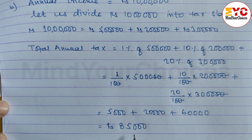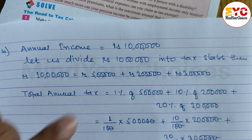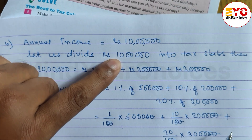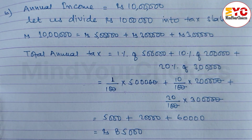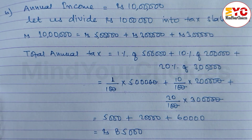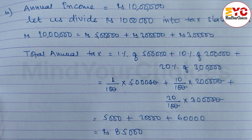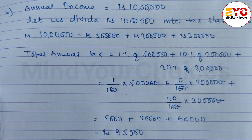Total annual tax is rupees 85,000. So for 10 lakhs earning, the income tax is 85,000 rupees. Hope you understand Question 1b.